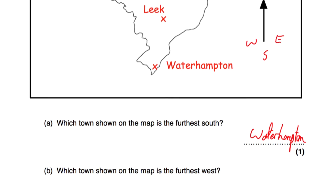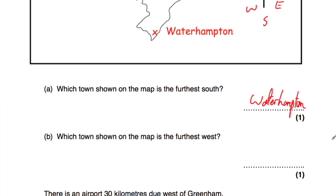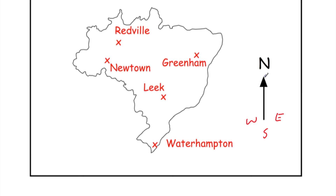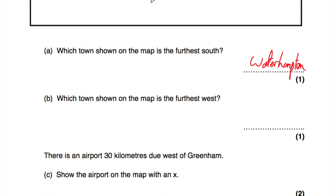Part B says which town on the map is the furthest west? West is going to be to the left, so the furthest west would be the town which is furthest to the left. That's going to be Newtown. So Newtown is the furthest west.